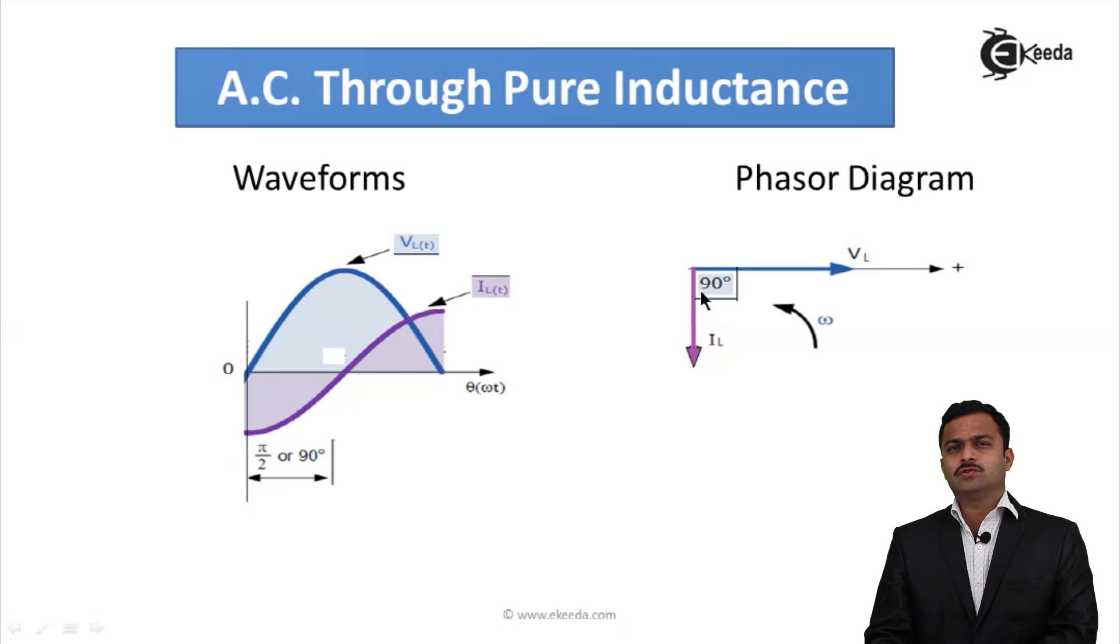Corresponding phasor diagram I have shown like this: voltage is a reference and current lags. If I take an anticlockwise direction, current lags voltage by 90°.